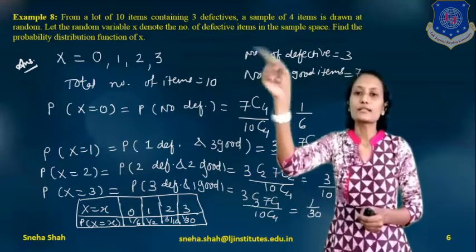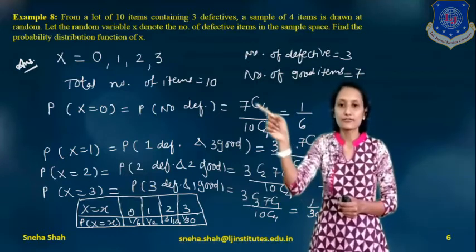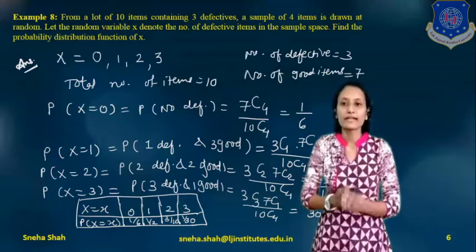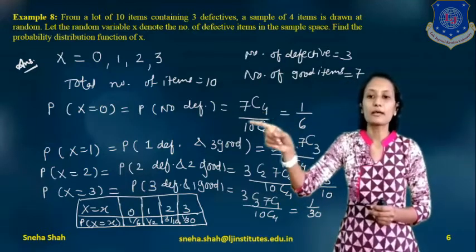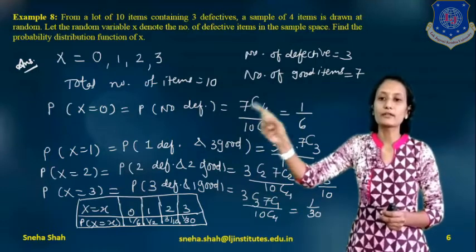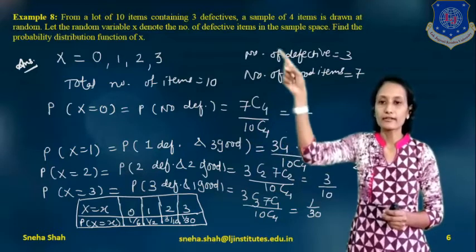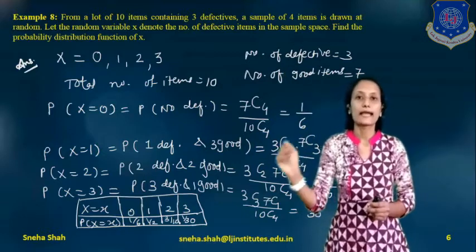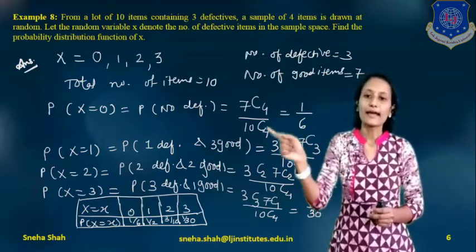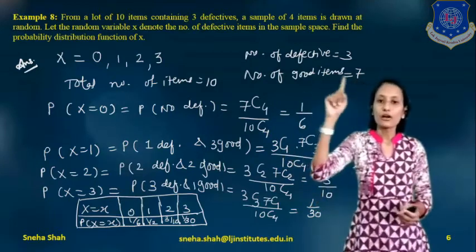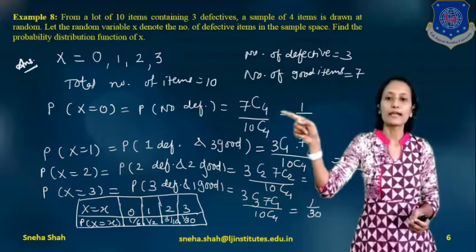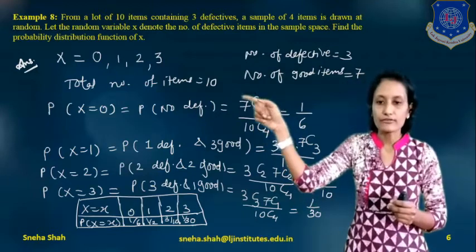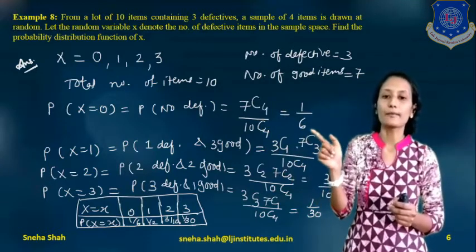For x = 0 (no defective items): all 4 selected are good items. P(x=0) = C(7,4) / C(10,4) = 35/210 = 1/6. For x = 1 (1 defective, 3 good): P(x=1) = C(3,1) × C(7,3) / C(10,4) = 3 × 35 / 210 = 1/2.